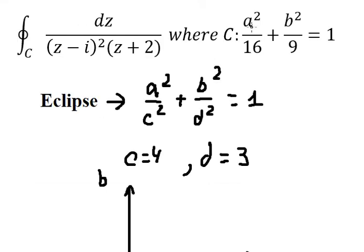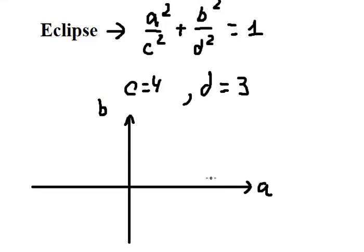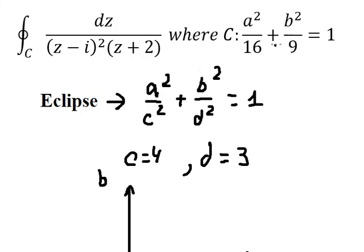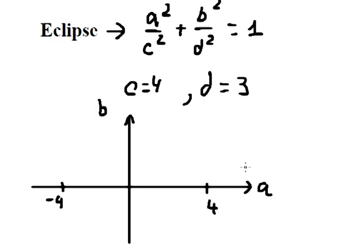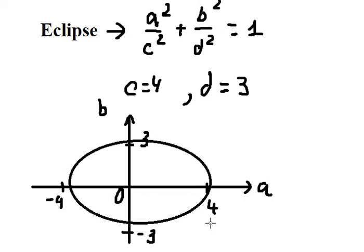For a, we have number four, so I put positive four here and negative four here. For b, that is number three, so I put negative three on here and positive three on here. Now we need to graph this one.